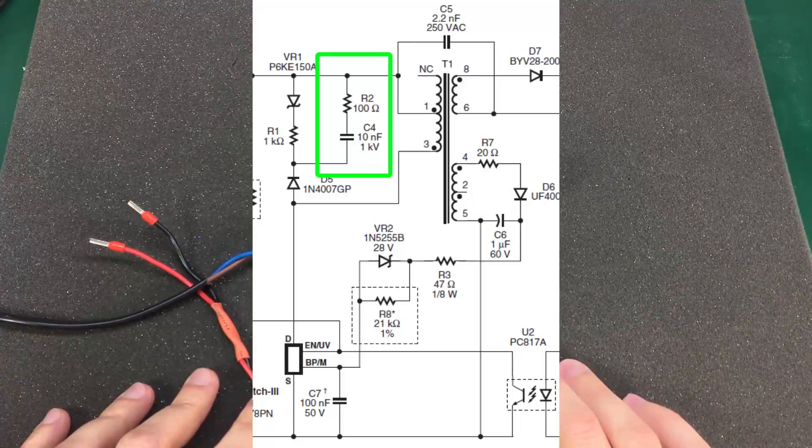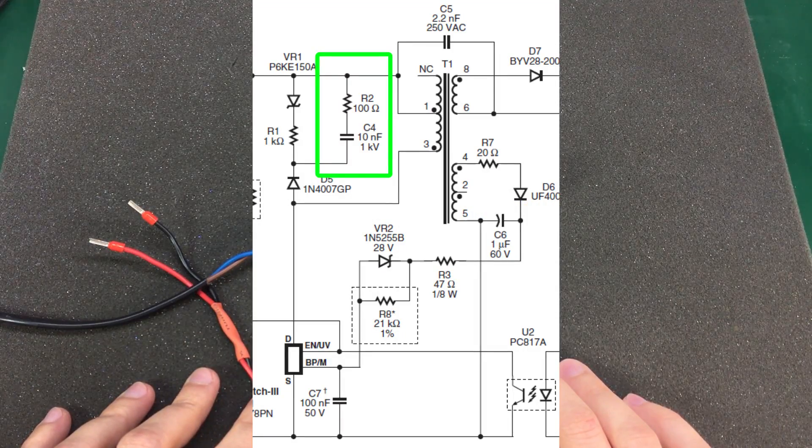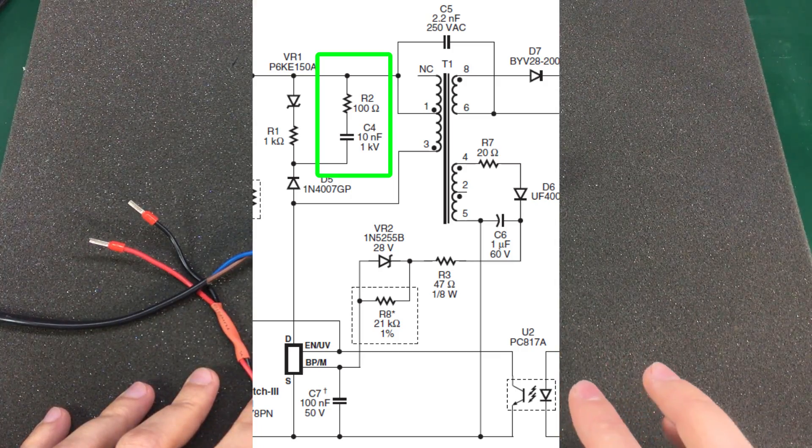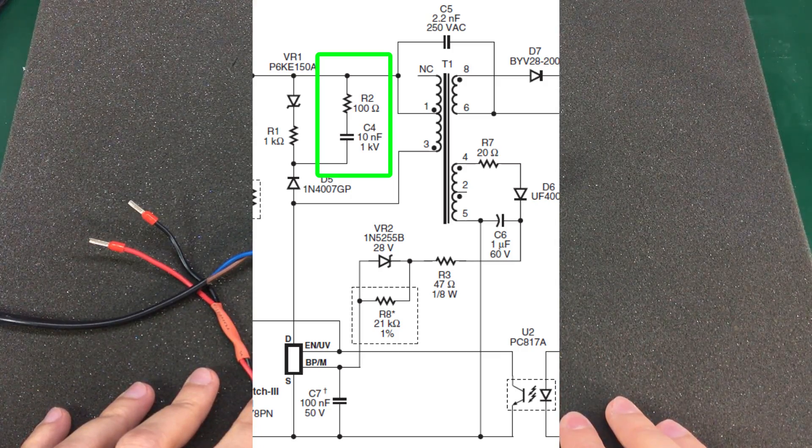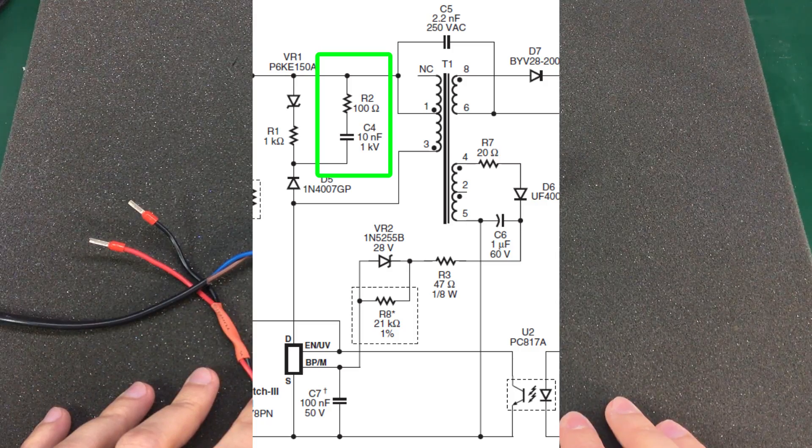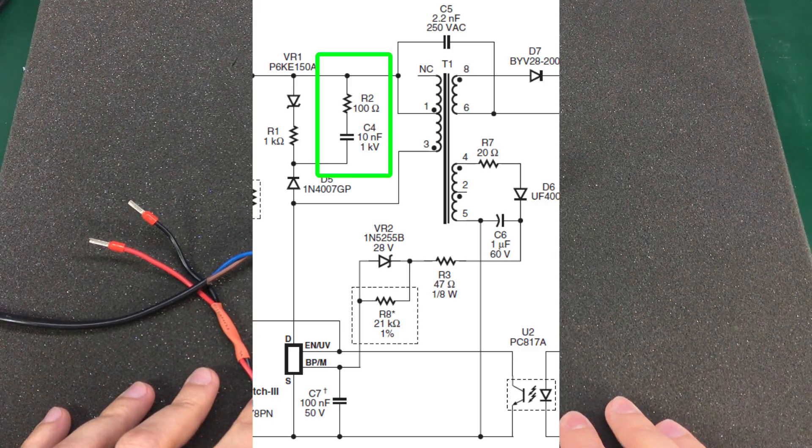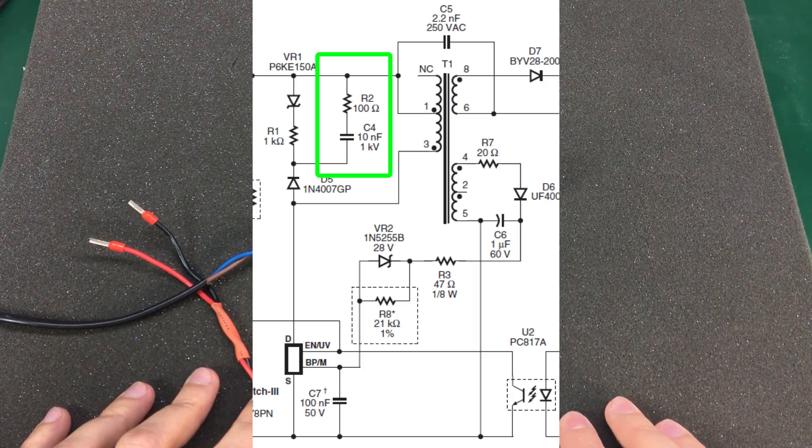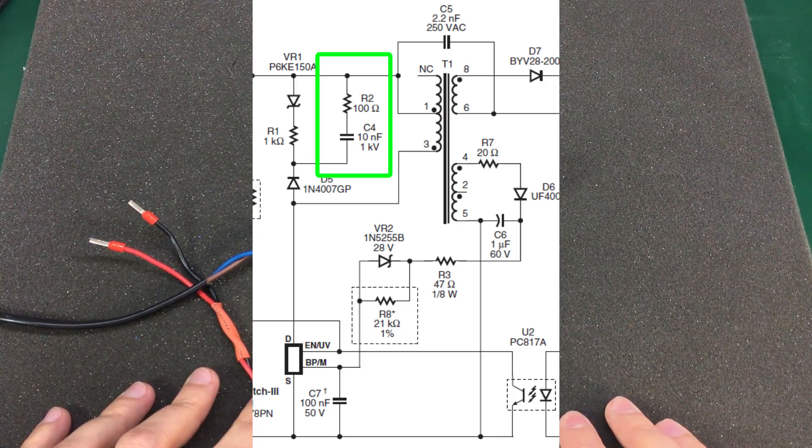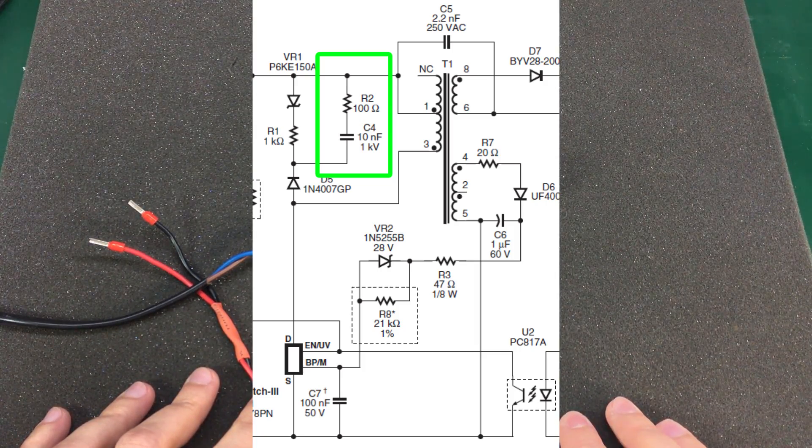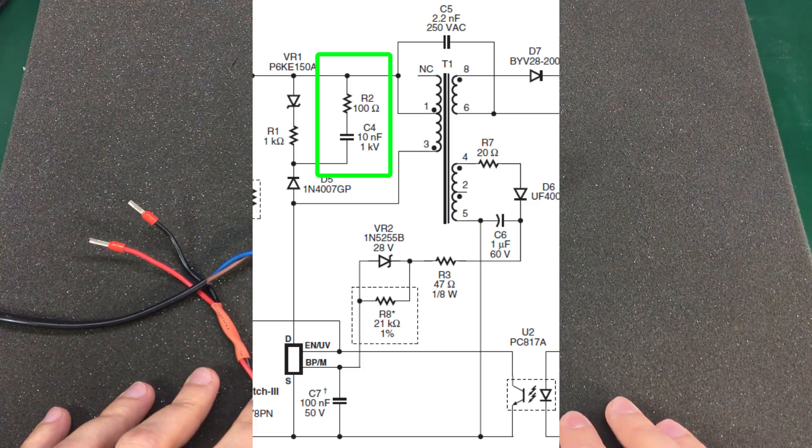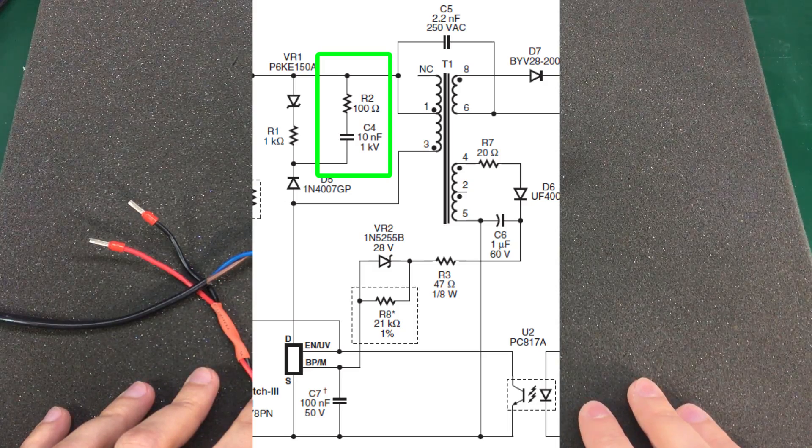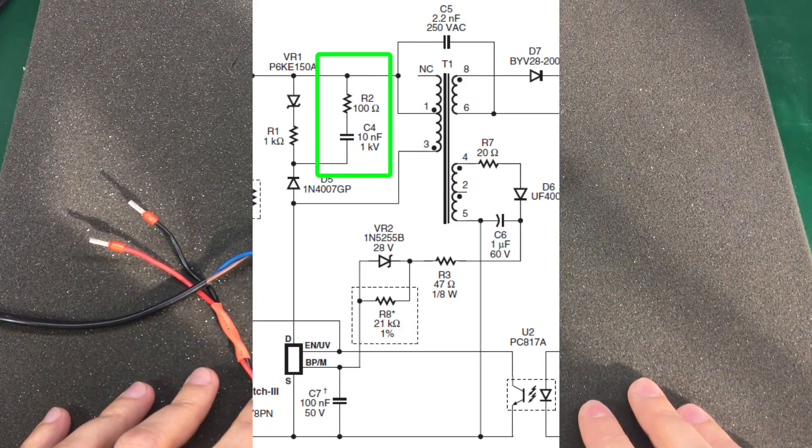Some people suggested that a missing snubber network across the primary could be the problem. But I already knew my circuit was going into thermal protection, so I wasn't sure a missing snubber RC network could cause my chip to overheat and go into thermal protection. After all, the circuit wasn't loaded at all, just regulating in standby, so the voltage peaks couldn't have been that high. And I also had a basic clamping circuit with the zener and the fast diode, so I didn't bother implementing that snubber.